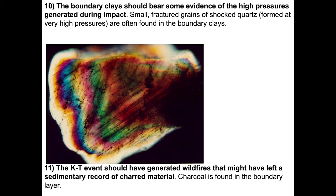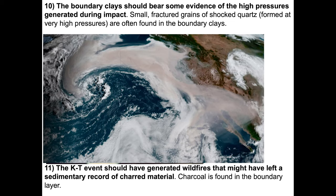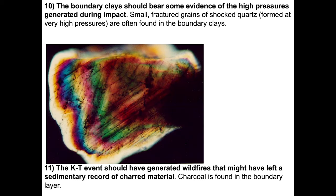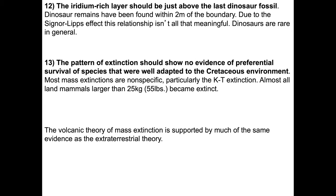Number ten: the boundary clay should bear some evidence of the high pressures generated during impact. Yes, that is observed as well. When we look at fractured grains of quartz, we can see stress lines in the polarity of the light traveling through these crystals — evidence of pressure that wouldn't be generated by a volcanic event, though this is still a bit controversial. Number eleven: the KT event should have generated wildfires that left a sedimentary record of charred material. Charcoal is found at the boundary layer. Number twelve: the iridium-rich layer should be just above the last dinosaur fossil. Dinosaur remains have been found within a couple of meters of the boundary, but due to the rareness of dinosaurs, we encounter what's called the Signor-Lipps effect.